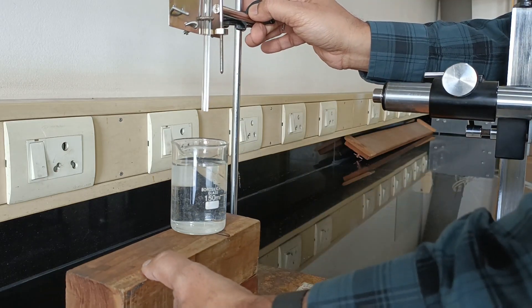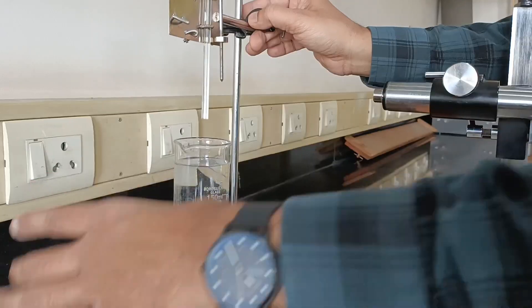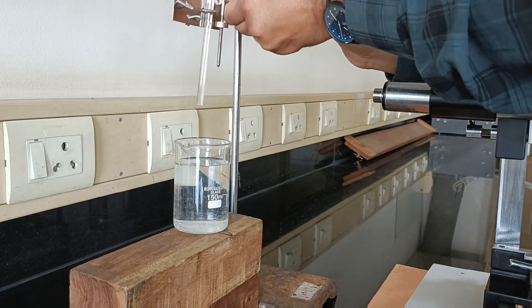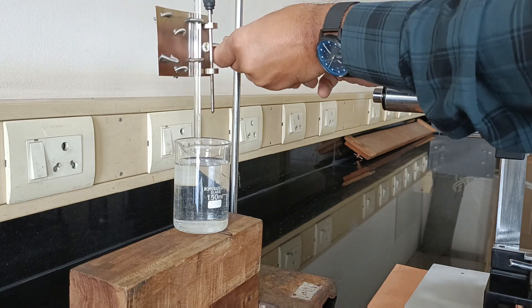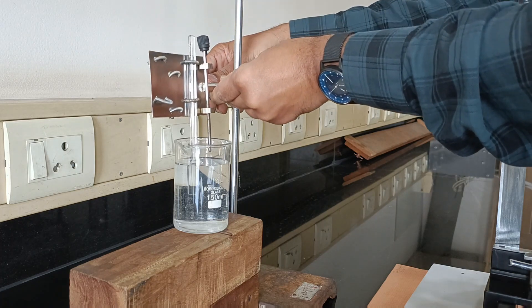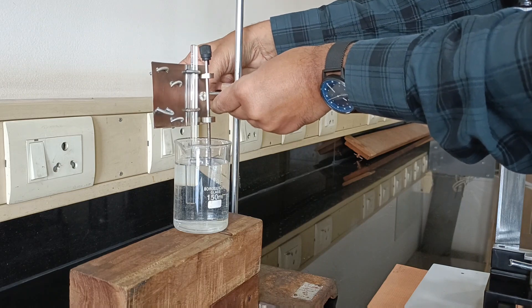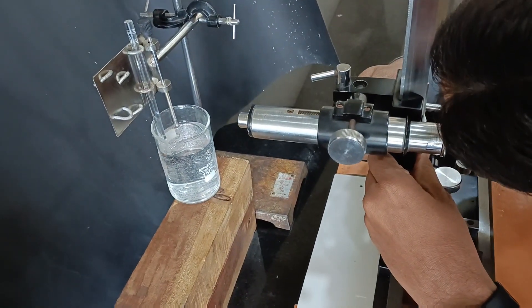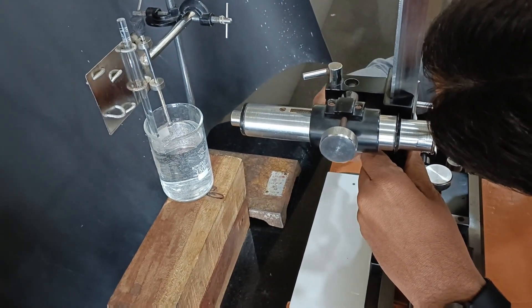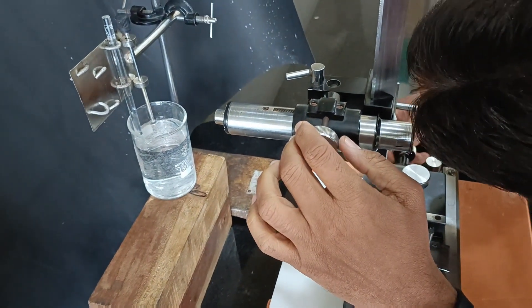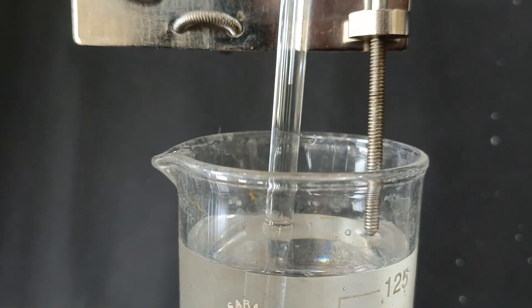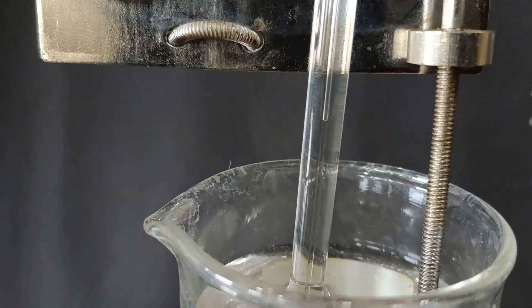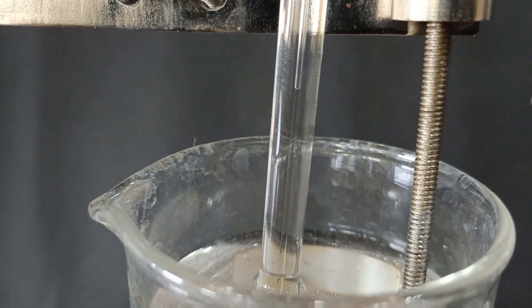Immerse the capillary in a beaker which is three-fourth filled with water. Adjust the microscope as shown and observe the meniscus of the water in the capillary bore. Take the readings on the vertical scale of the vernier scale attached.